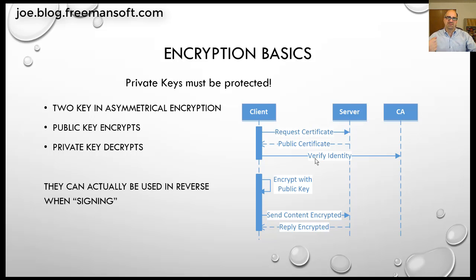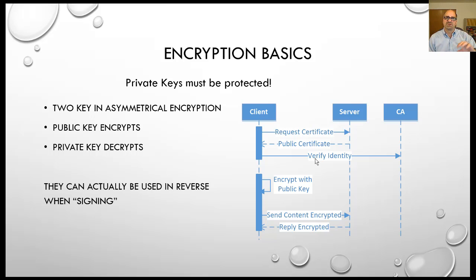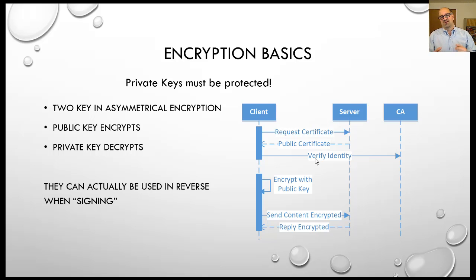So you have this relationship where two parties can talk to each other using this encryption method. In TLS, or link-level encryption in transit, what you tend to do is encrypt data with what they call a public key, so everybody is allowed to send data using this public key. The second key, which does the decryption, they make private, so nobody else can decrypt it except somebody who has the private key.